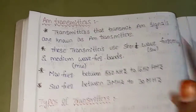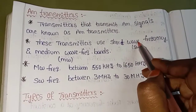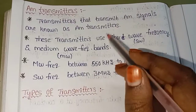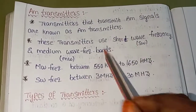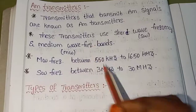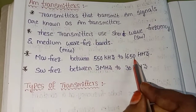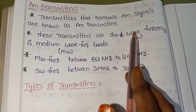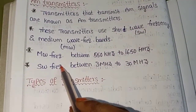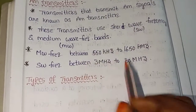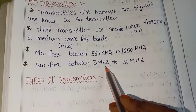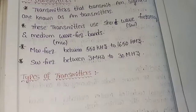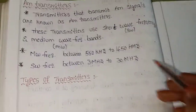These transmitters operate in the medium wave band range of 550 kHz to 1650 kHz. The short wave (SW) frequency range is 3 MHz to 30 MHz.